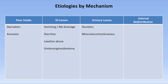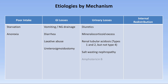Types 1 and 2 renal tubular acidosis are associated with hypokalemia — see my video on normal anion gap metabolic acidosis for more detail. Salt-wasting nephropathy is due to inherited defects of transporters in the renal tubule. The antifungal amphotericin B is very frequently a cause of hypokalemia due to its effect on tubular membrane permeability. Polyuria — such as from primary polydipsia or hyperglycemia-induced osmotic diuresis — can cause hypokalemia by delivering so much potassium to the renal tubules that it overwhelms their reabsorptive capacity. Hypomagnesemia can also induce hypokalemia, though the exact mechanism remains unclear.